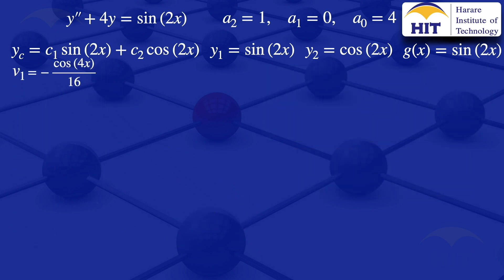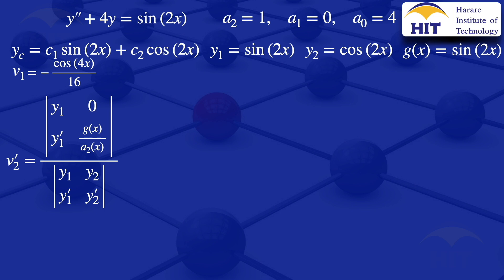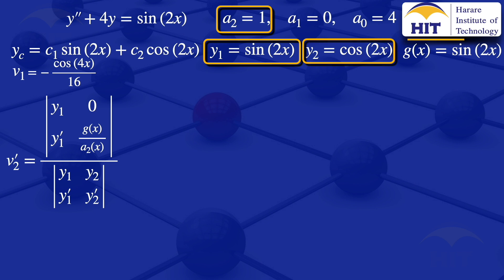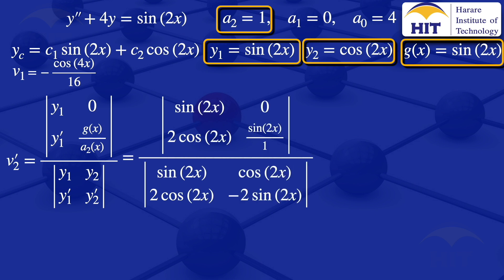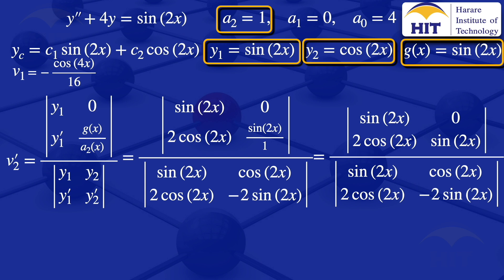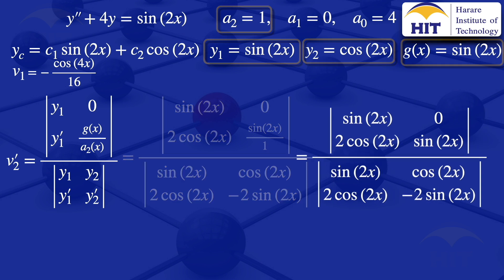We now find V2. First we need V2', given by the determinant of [y1, 0; y1', g(x)/a2] divided by the determinant of [y1, y2; y1', y2']. Substituting y1 = sin(2x), y2 = cos(2x), g(x) = sin(2x), and a2 = 1, we get the determinant of [sin(2x), 0; 2cos(2x), sin(2x)] divided by the determinant of [sin(2x), cos(2x); 2cos(2x), -2sin(2x)].